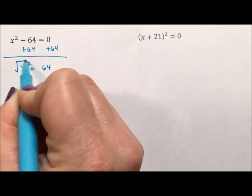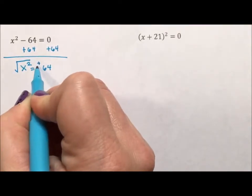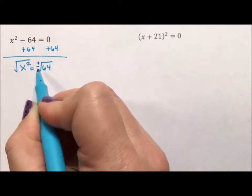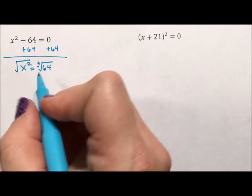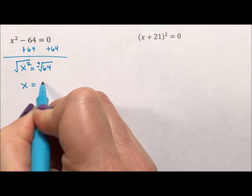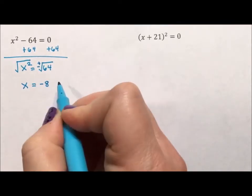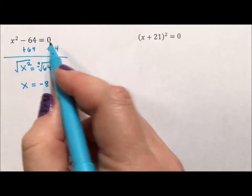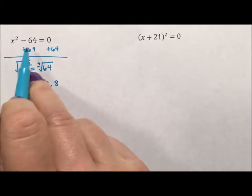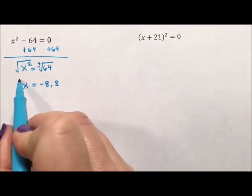But the thing about the square root is I have to acknowledge that this could have come from a positive place or a negative place. Because negative 8 squared is positive 64, which would give us zero. Positive 8 squared is positive 64, which would give us zero.